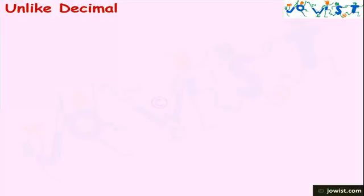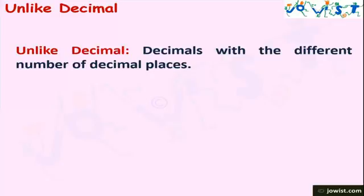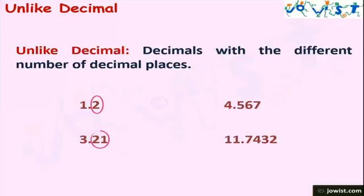Now we know like decimals. Let's understand unlike decimal numbers. Decimal numbers having different numbers of decimal places are called unlike decimal numbers. For example, we have the numbers 1.2, 4.567, 3.21, and 11.7432 — all these numbers have different numbers of decimal places. Hence, these are unlike decimal numbers.